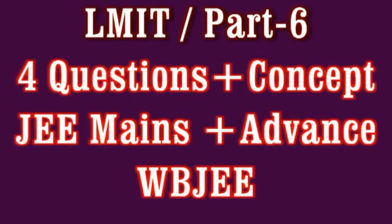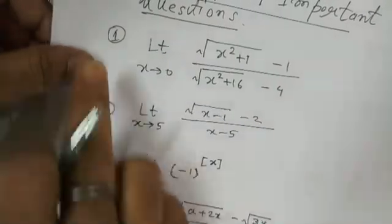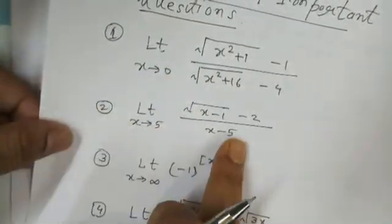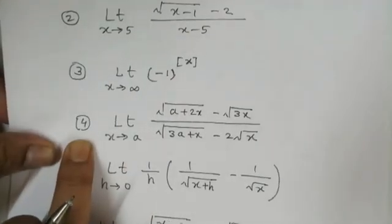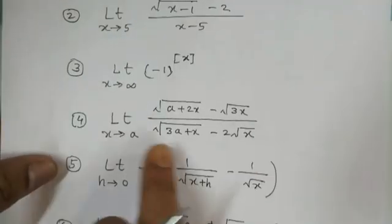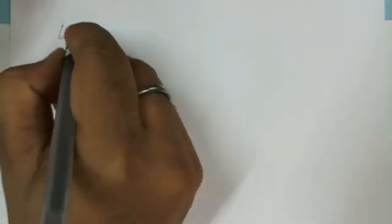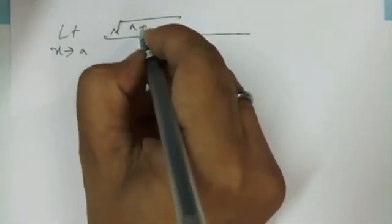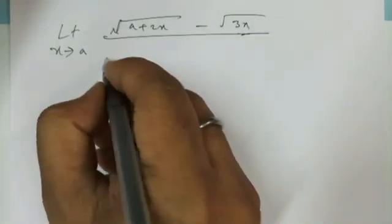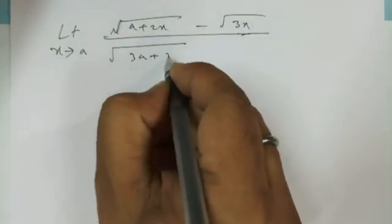Hello everyone, welcome to Inspired Mathematics Classes. In the last video I discussed question number one, question number two, and question number three. Now I will start to solve question number four. Question number four is: limit x tends to a, under root of (a + 2x) minus 3x, over under root of (3a + x) minus under root of x.